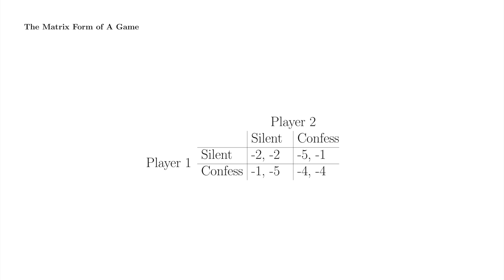The story behind this game is that the two players are accomplices in some crime. The police apprehend them and give each player the following combination of an offer and a threat. If you're silent and the other guy confesses, we will use all the evidence against you and send you away for five years and cut the other guy a deal and send her away for only one year.